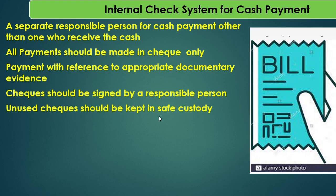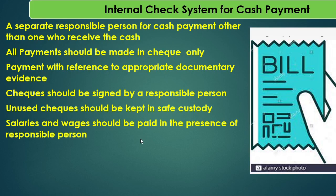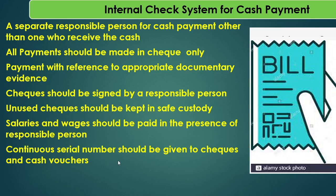The fifth step is that unused cheques should be kept in safe custody. The sixth step is that salaries and wages should be paid in the presence of a responsible person — while making salary or wage payments, apart from the cashier and the receiving employee, another responsible person should be there to oversee all activities. The seventh step is that continuous serial numbers should be given to cheques and cash vouchers, so that if any particular cheque number is missing, the payment can be easily identified.